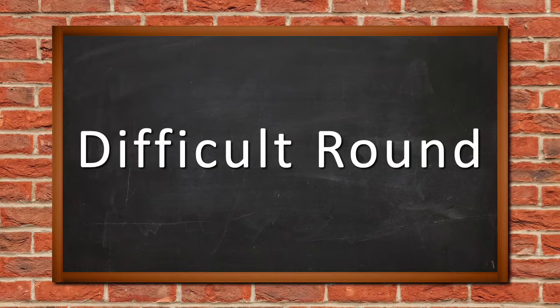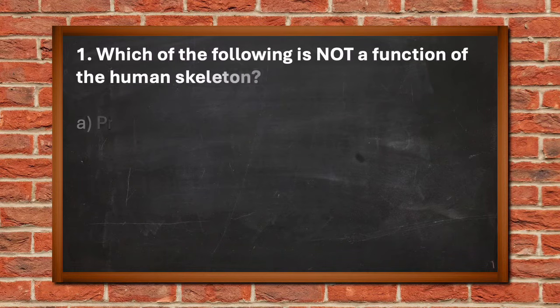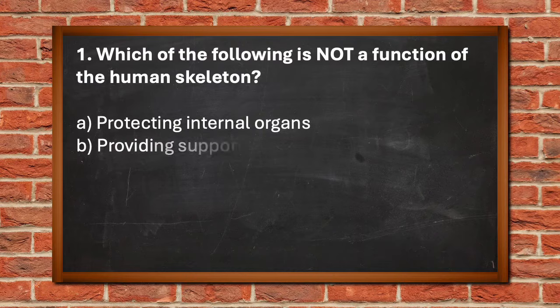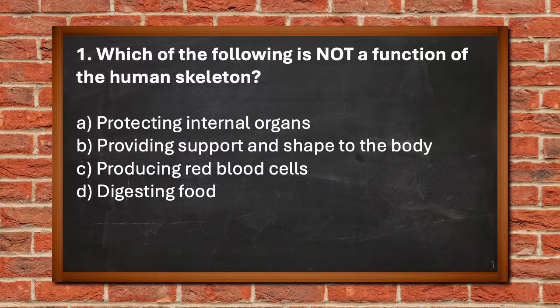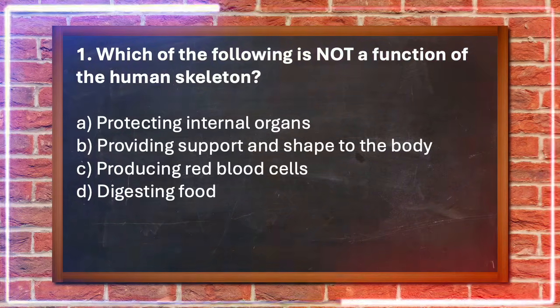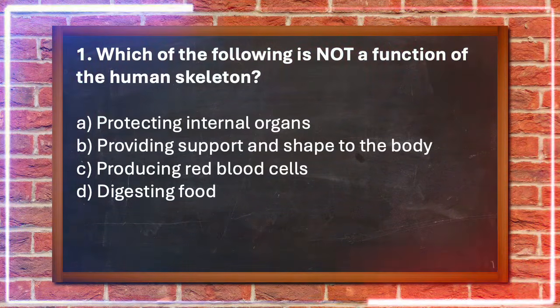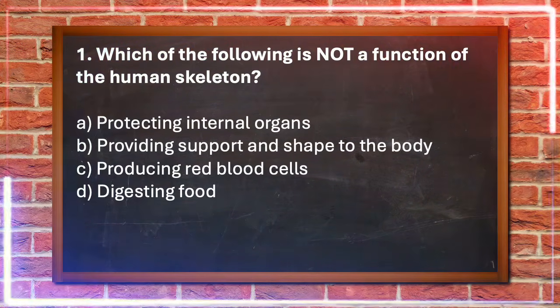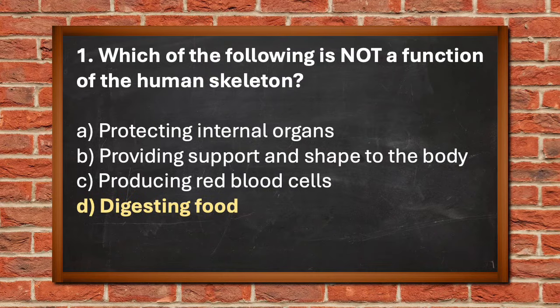Difficult round. Number one. Which of the following is not a function of the human skeleton? A. Protecting internal organs, B. Providing support and shape to the body, C. Producing red blood cells, D. Digesting food. The answer is D. Digesting food.